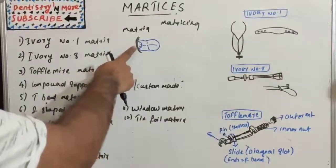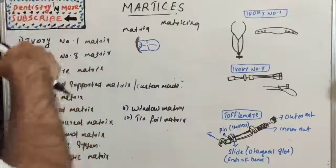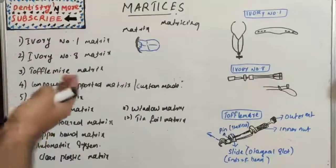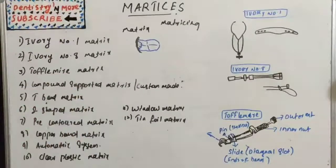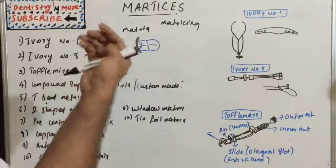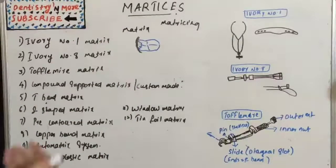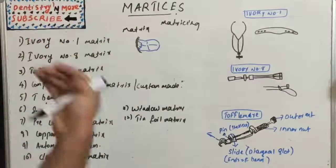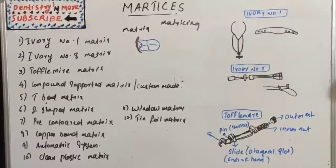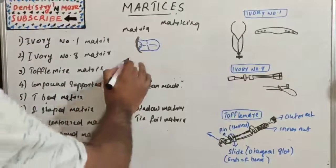The matrix should be rigid enough to confine the restorative material as it is condensed under pressure and should not get displaced easily from its position. It should hold the restoration while it is being condensed — that is a prime function of matrix. It should also provide proper proximal contact and contour.